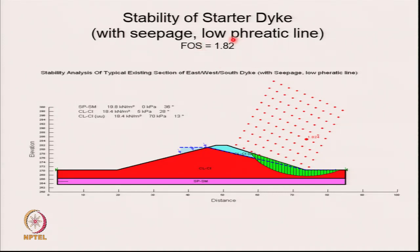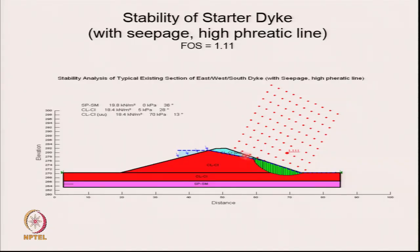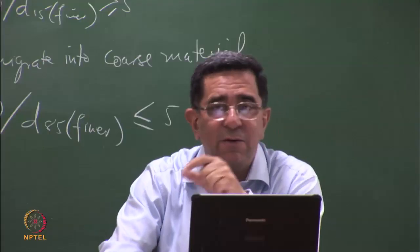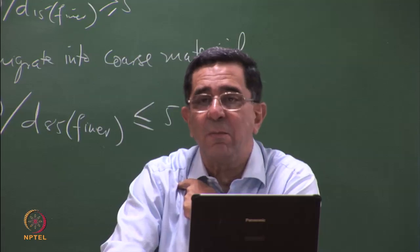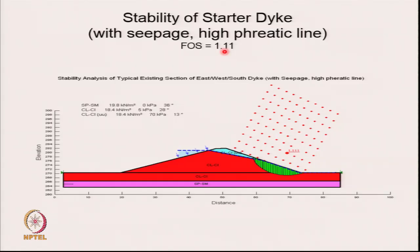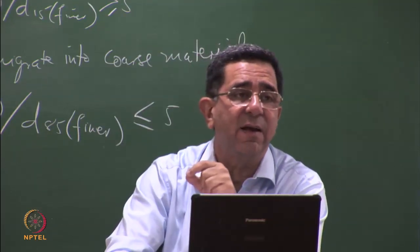A factor of safety of 1.1 is less than 1.5 and not acceptable for a long-term case. This embankment does not have an acceptable factor of safety. The absence of an internal drain will always cause a problem when the phreatic line is high. When flow is occurring parallel to the outer slope on the downstream face, the factor of safety is down to 1.1.